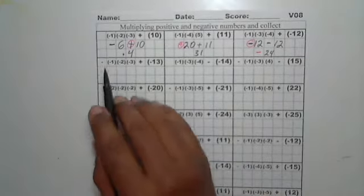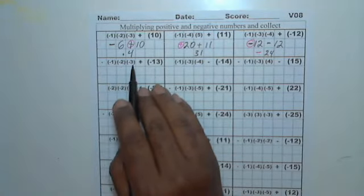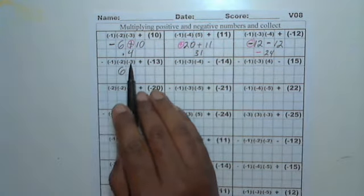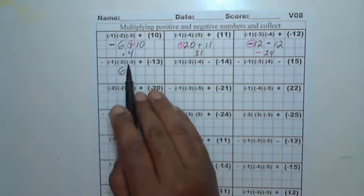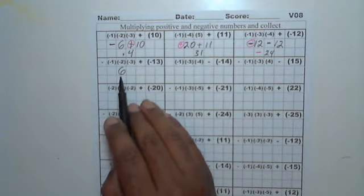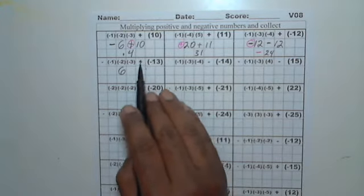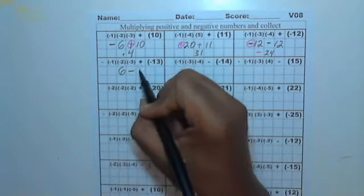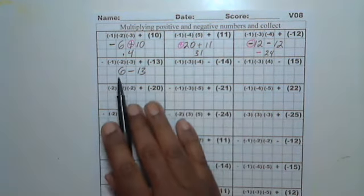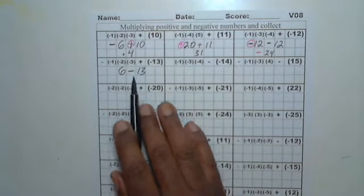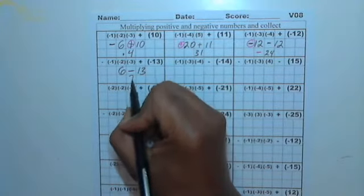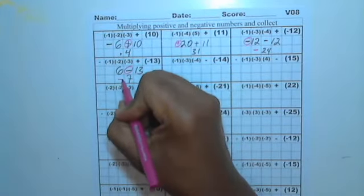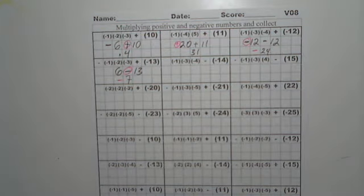Next, we have 1 times 2 is 2, and then 2 times 3 is 6. We have a total of 4 negatives that we're multiplying. If you multiply 4 negatives together, your final answer will be positive. Here we have a positive and a negative together — these will combine to become 1 negative, and then 13. These are different signs — positive 6 and negative 13 — so we're going to subtract: 13 minus 6 leaves 7. The bigger sign is the 13, so this is negative 7.